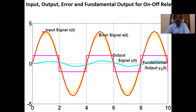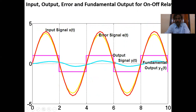The input signal is always sinusoidal — the red line is the sinusoidal input, and the yellow line is the error signal. This is the On-Off output: when x(t) > 0, the output is positive; when x(t) < 0, the output is negative. The magnitude equals +M for the positive half and -M for the negative half.